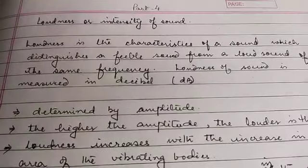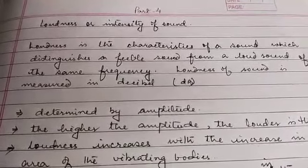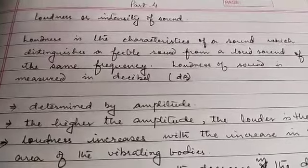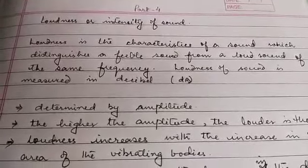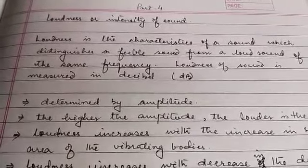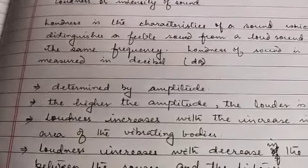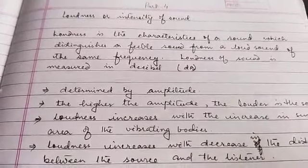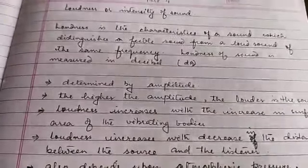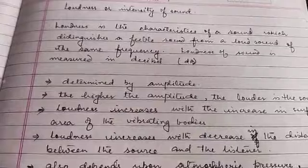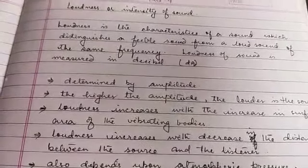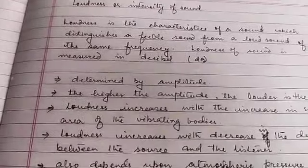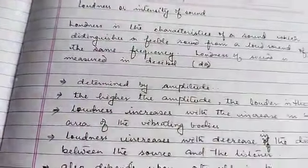When our ear perceives a sound, it perceives it as either loud or soft. This depends on the intensity, or the amount of energy of the sound. Intensity is the amount of energy of the sound. Loudness is a characteristic of sound which distinguishes a feeble sound from a loud sound of the same frequency. With the same frequency, two sounds might have different amplitudes, and this difference in amplitude distinguishes sound as loud or feeble.